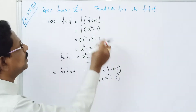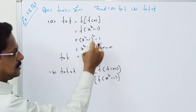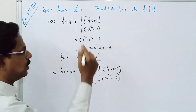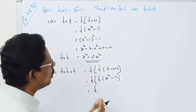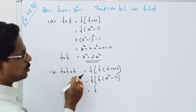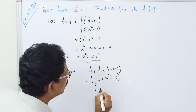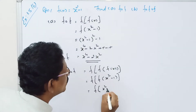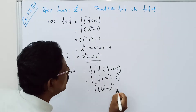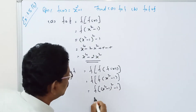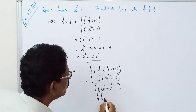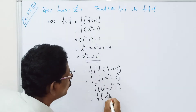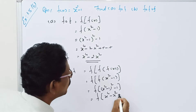Substitute the value of x. Since f composition f of x equals x to the power 4 minus 2x squared, we now compute f of that result. So it is equal to f of x to the power 4 minus 2x squared, which equals x squared minus 1 the whole squared minus 1, giving x to the power 4 minus 2x squared plus 1 minus 1.